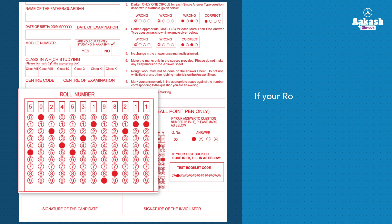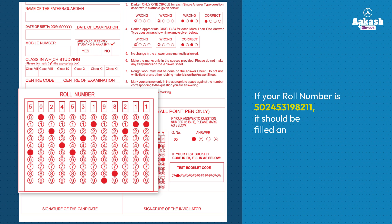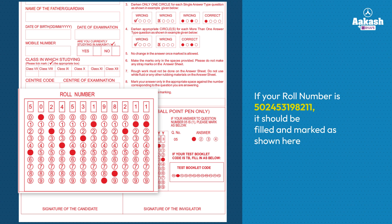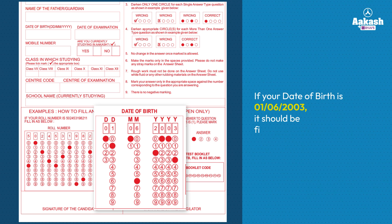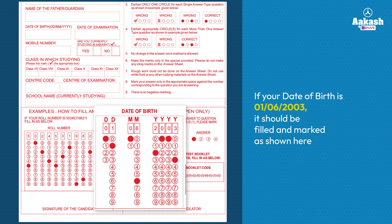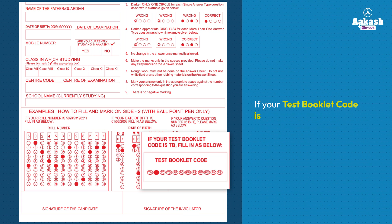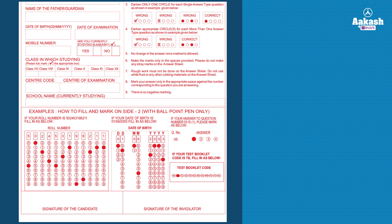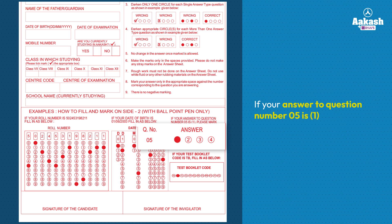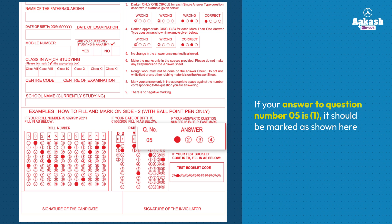If your roll number is 502453198211, it should be filled and marked as shown here. If your date of birth is 1st June 2003, it should be filled and marked as shown here. If your test booklet code is TB, it should be marked as shown here. If your answer to question number 5 is 1, it should be marked as shown here.